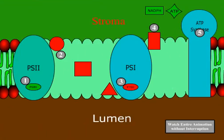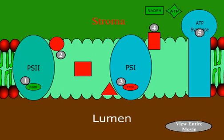Here you are looking at a close-up of the thylakoid inner membrane showing five specific points of interest on the electron transport chain. Click on any one of them for more information.